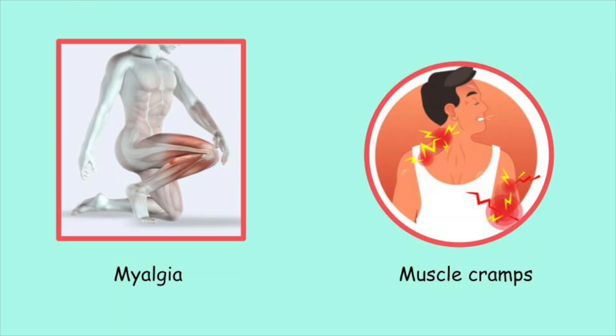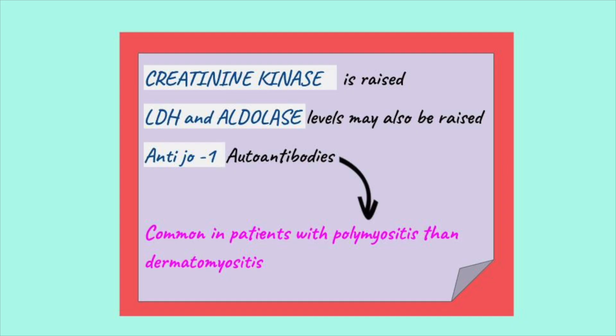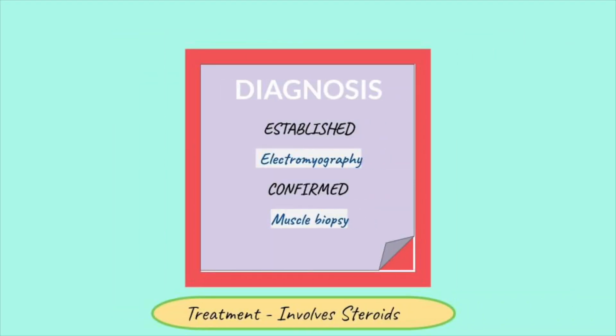Patients may also experience myalgia and muscle cramps, making activities such as rising from a low chair, climbing steps, lifting objects, and combing hair difficult. Regarding investigations, creatinine kinase can be up to 50 times the normal level, and about 20% have anti-Jo antibodies positive. While the diagnosis is established by electromyography, it is confirmed by muscle biopsy, which is the definitive test. Steroids are the mainstay of treatment.